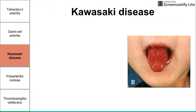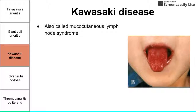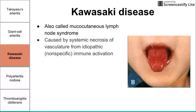Next, we have Kawasaki disease. Kawasaki disease is the only one on this list that affects children. It is also called mucocutaneous lymph node syndrome, and we do see a mucocutaneous symptom called strawberry tongue, as shown in the picture, along with adenopathy. Those two main characteristics explain why mucocutaneous lymph node syndrome is another name for Kawasaki disease.